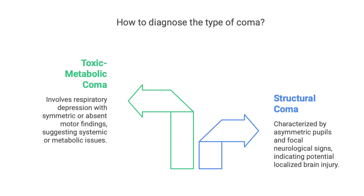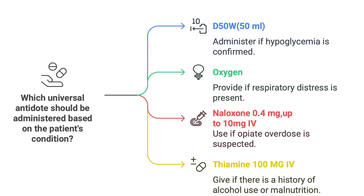A patient's condition can change rapidly, so we need to be vigilant and reassess frequently, especially in the early stages when the cause might not be immediately clear. The source also provides a table listing toxic metabolic causes of fixed pupils, highlighting how pupil dilation or constriction can be a really big diagnostic clue.